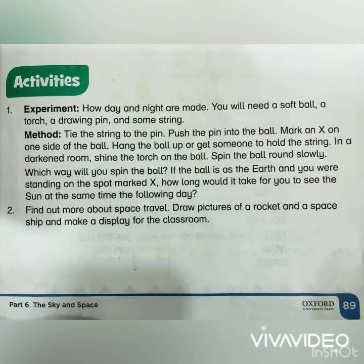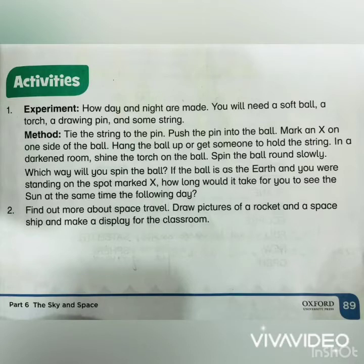For this experiment you will need a soft ball, a torch, a drawing pin, and some string. Tie the string to the pin, push the pin into the ball, and mark an X on one side of the ball. Hang the ball up and get someone to hold the string in a darkened room, then shine the torch on the ball.